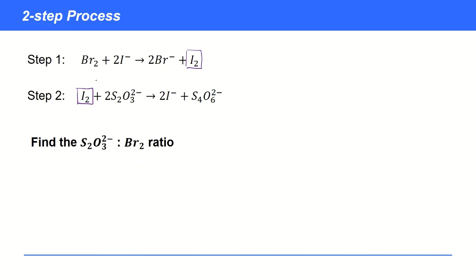The next stage is to find the mole ratio between the two species we're interested in: bromine and thiosulfate. We want to link each of these to iodine with a ratio. Looking at the first equation, we can see that there's one bromine — the balancing number is one — so one mole of bromine is going to react to form exactly one mole of iodine, because that balancing number is also one.